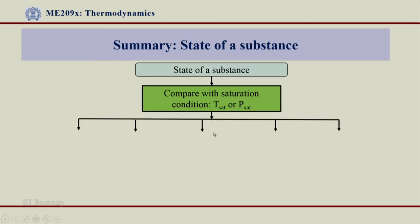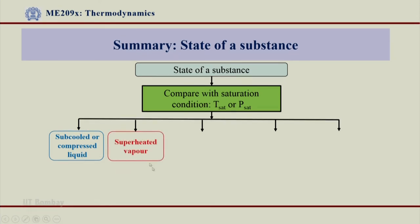There are 3, 4, 5 possibilities. The first possibility could be that it is in the subcooled or compressed liquid region — if the temperature is less than T_sat or the pressure is more than P_sat. Or if the temperature is more than T_sat or the pressure is less than P_sat, you could be in the superheated vapor region.